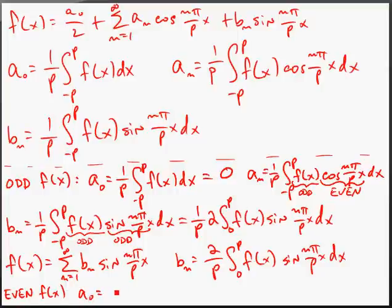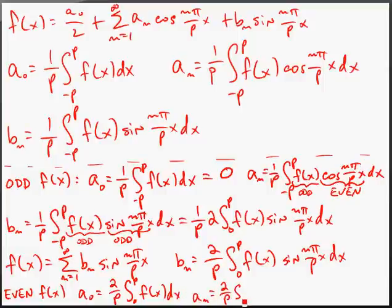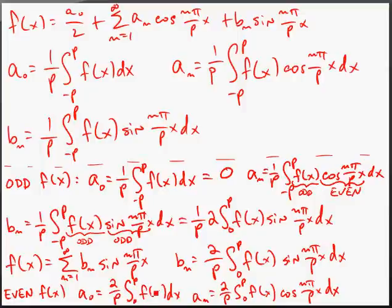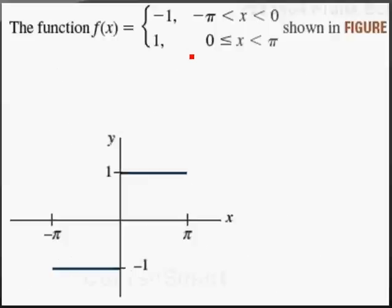For an even function, since the integrand is even, the integral from -P to P equals two times the integral from 0 to P. So a₀ = (2/P) ∫₀ᴾ f(x) dx, and aₙ = (2/P) ∫₀ᴾ f(x) cos(nπx/P) dx. These come directly from the properties of even functions described on page 637.